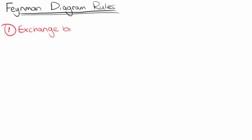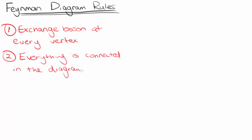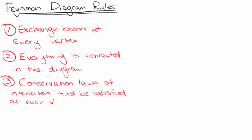Recall there are four key rules to drawing Feynman diagrams. At each vertex or interaction point, there must be an exchange boson. All the different parts of the diagram must be connected. The conservation laws of each interaction must be satisfied at each vertex. And each vertex has exactly one arrow pointing into it and one arrow pointing out of it.